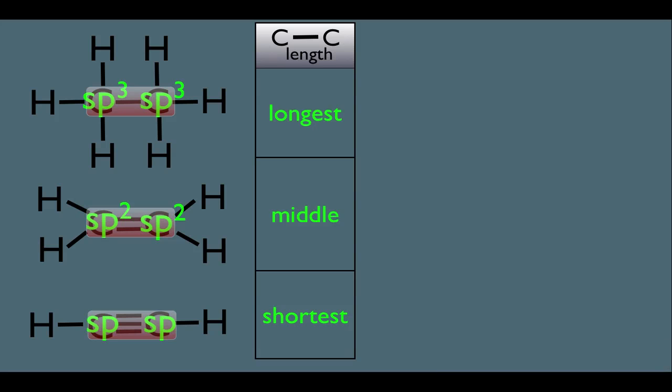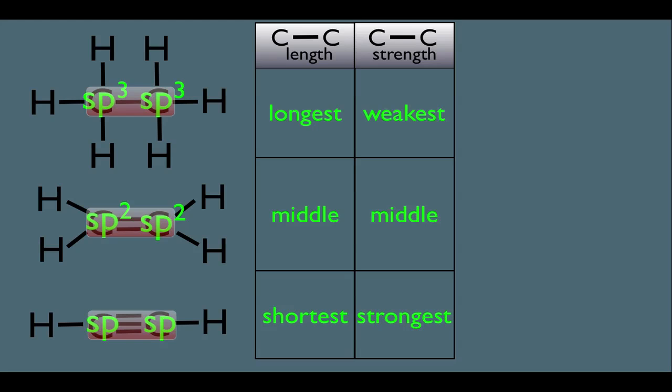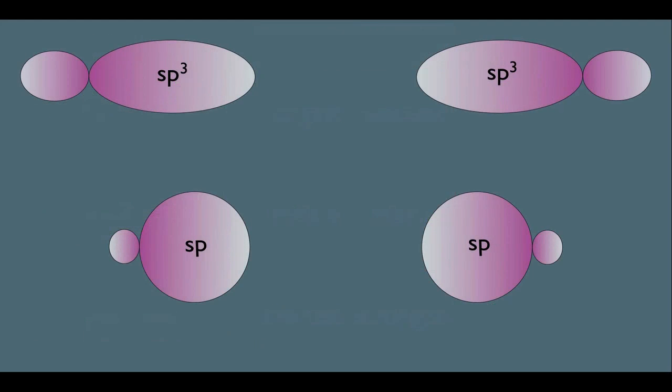But this is not the only thing that hybridization helps us understand. We could also understand the relative strengths of these bonds. Notice the trend here. The top molecule has the weakest bonds and the bottom molecule has the strongest bonds. And again don't memorize this. Why is this so? We could understand this.